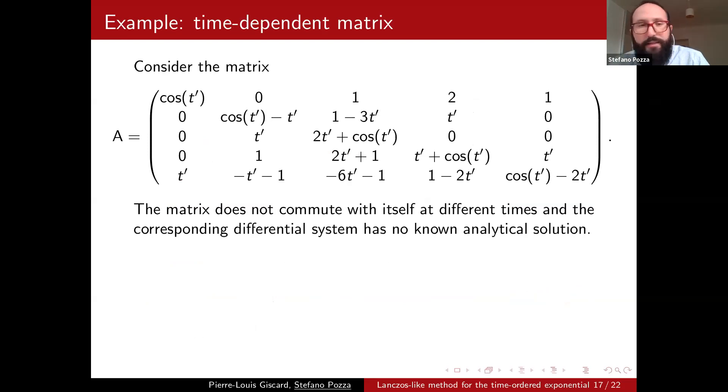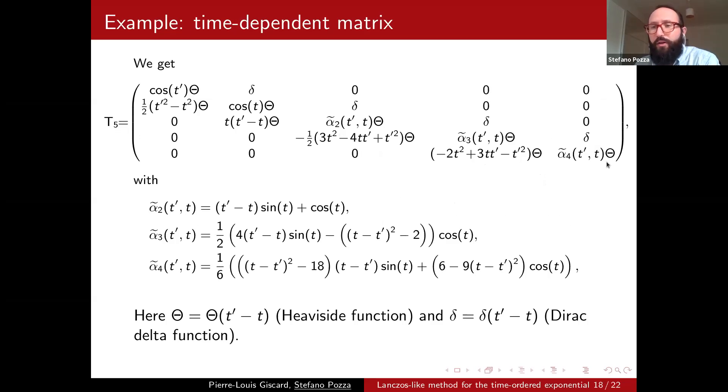So to give you a more concrete idea of what we have done until now, I'll show you an example. So we have a time-dependent matrix where you can see we have some trigonometric functions and some polynomials. This matrix does not commute with itself, so we cannot express the time-ordered exponential easily. And this is the output of the star-Lanczos algorithm. So don't be scared by this theta here and delta. They are Heaviside function. It just means that t prime must be larger than t. That was one of the assumptions. And delta is, again, our identity. So as in the definition, we have the identity on the upper diagonal. And you can see all the other entries are made of combination of trigonometric functions and polynomials.